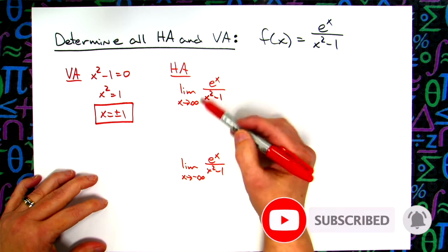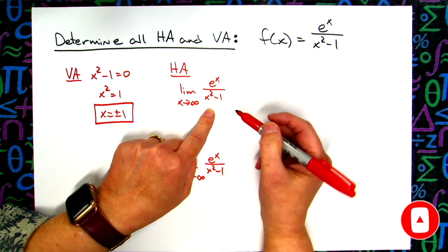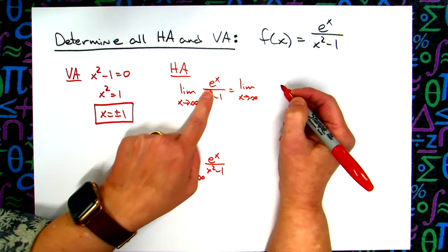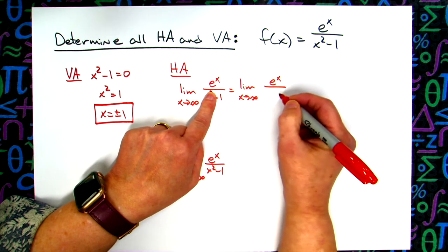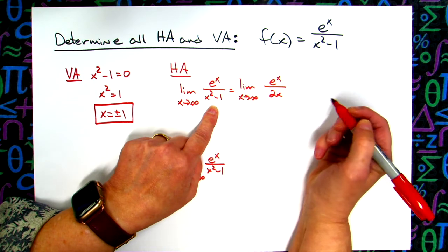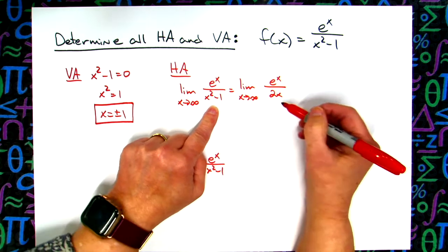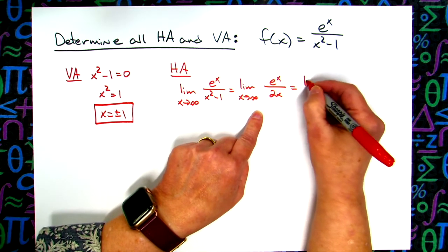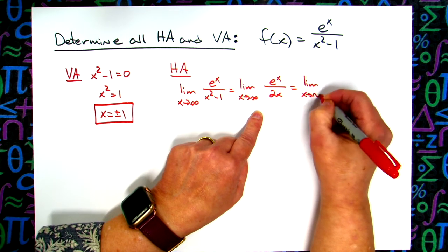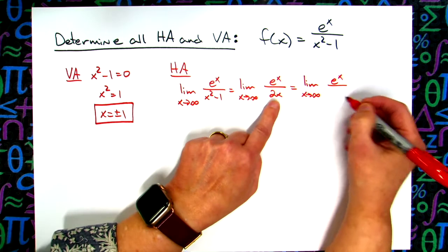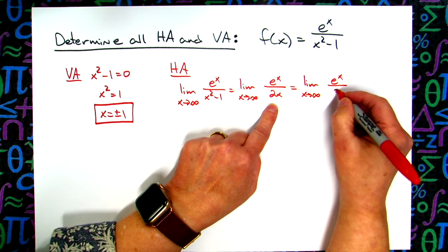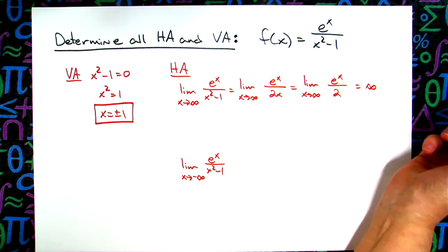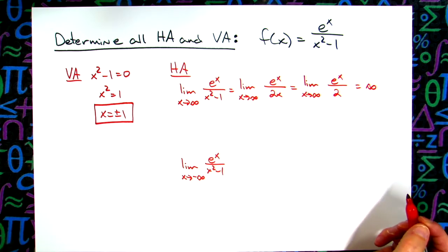The easiest way to work this out is to apply L'Hôpital's rule. So we have the limit as x approaches infinity — taking the derivative of the numerator gives e^x, and the derivative of the denominator gives 2x. Plugging in infinity over infinity gives another indeterminate form, so we apply L'Hôpital's rule one more time. The limit as x approaches infinity now has e^x on top and 2 on the bottom, which means the overall expression goes to infinity. So this does not give us a horizontal asymptote.